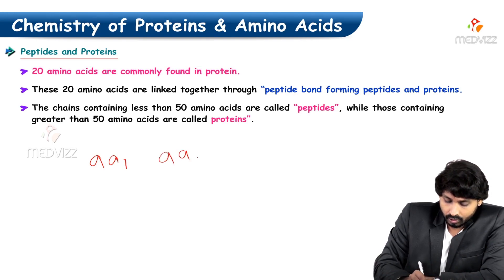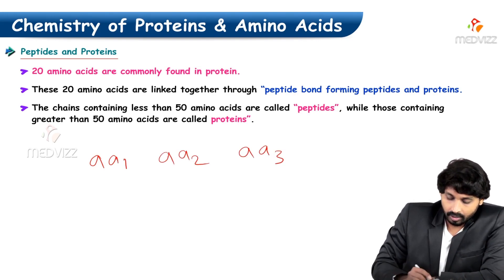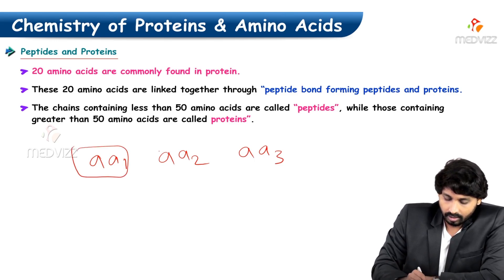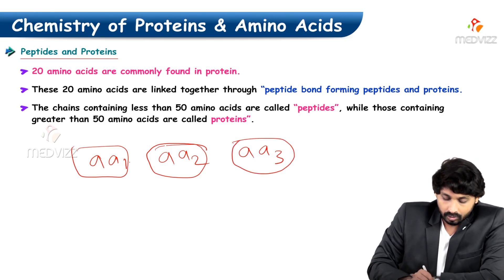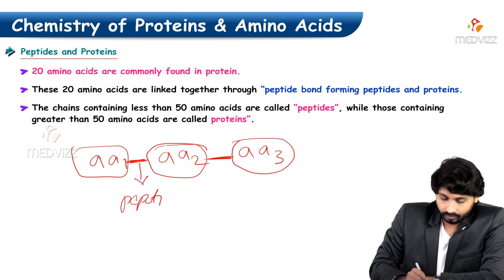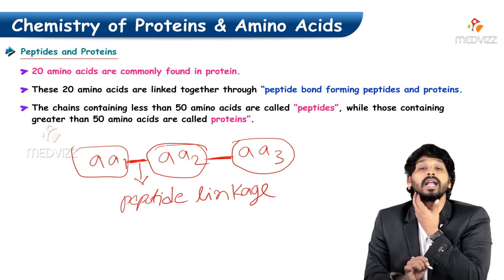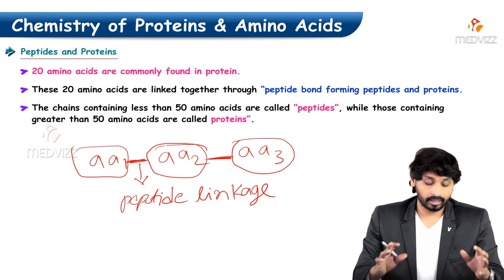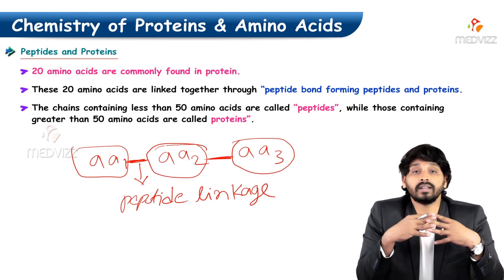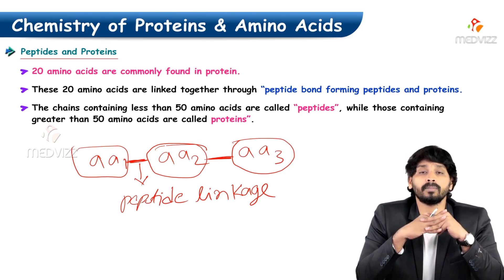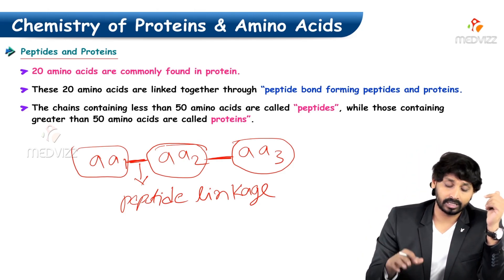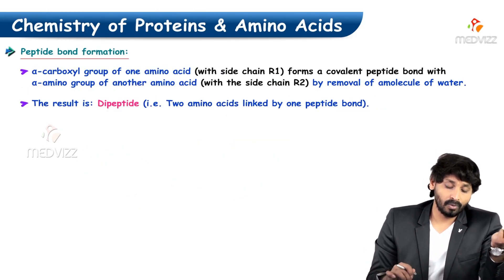How do amino acids join together? Amino acid one, amino acid two, amino acid three — they are held together by peptide linkage. Chains containing fewer than 50 amino acids are called peptides, while those containing more than 50 amino acids are called proteins.